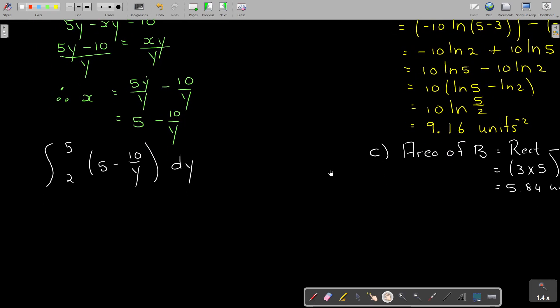I'm going to work this out. And see if I also get 5.84. Let's do that. Okay. So, I integrate. So, I get 5Y. Okay. Remember. Minus 10. And then it's 1 over Y. So, it's ln Y. Okay. And then it's going to be 2, 5 and 2. And then I put it in. So, it's 5, 5 minus 10, ln 5 minus 5, 2 minus 10, ln 2.